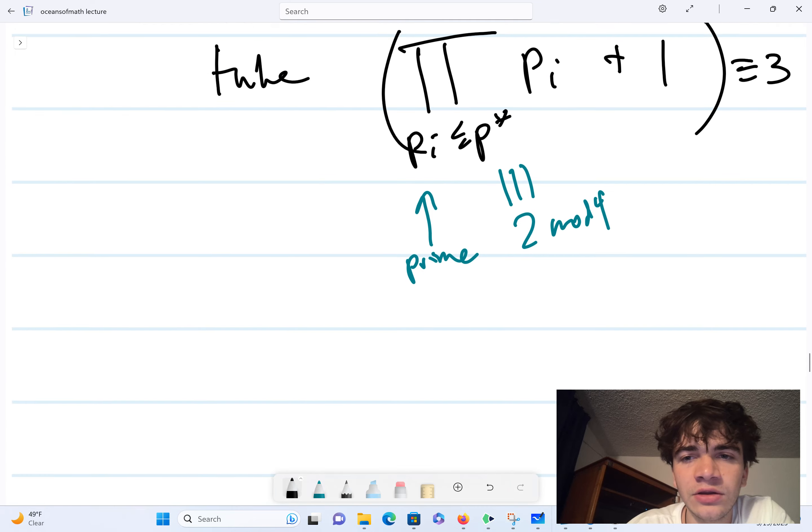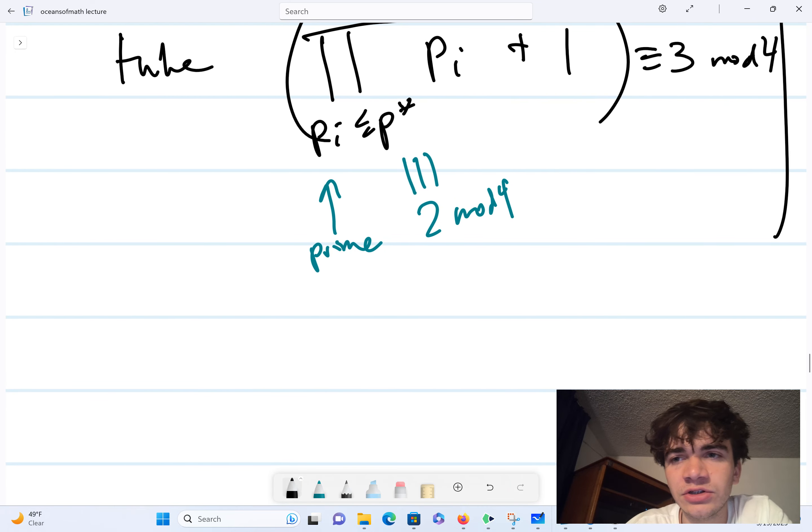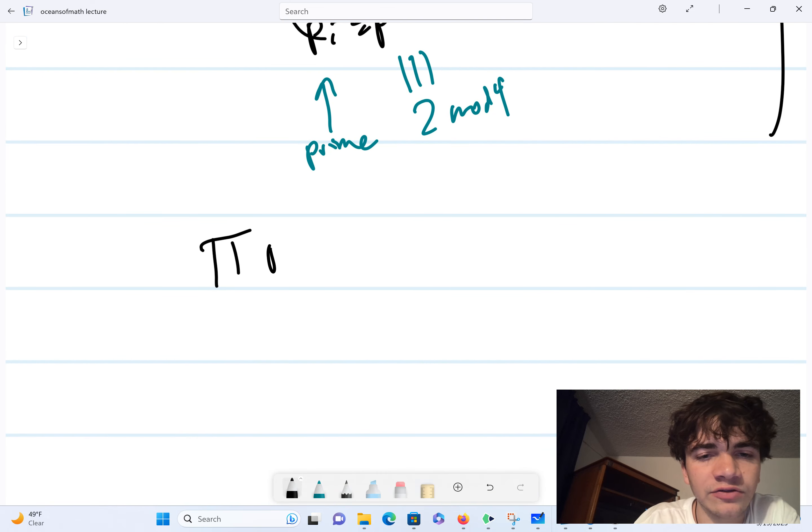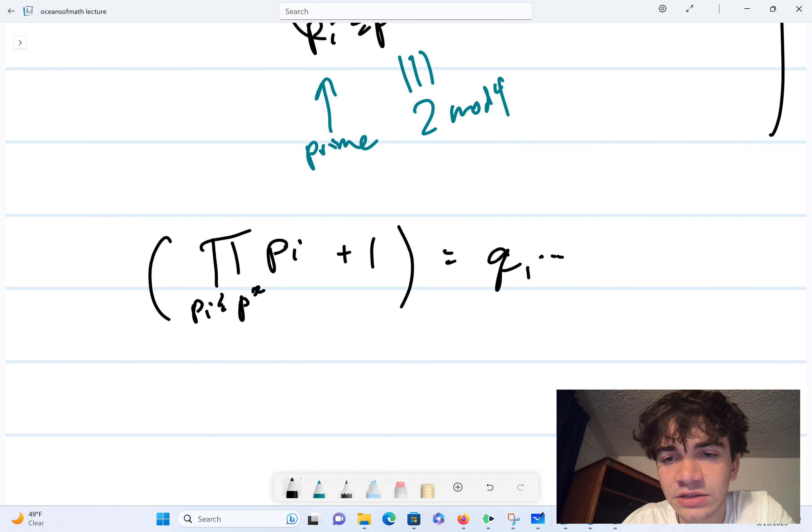And in addition, similar to the famous proof of how the number of primes is infinite, if I look at the product of p_i, where p_i is less than or equal to p star, and I add 1, if I look at its prime factorization, which we know is unique and exists.